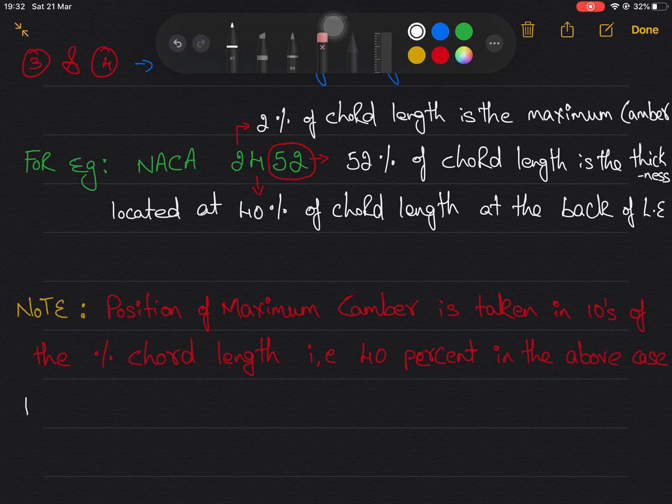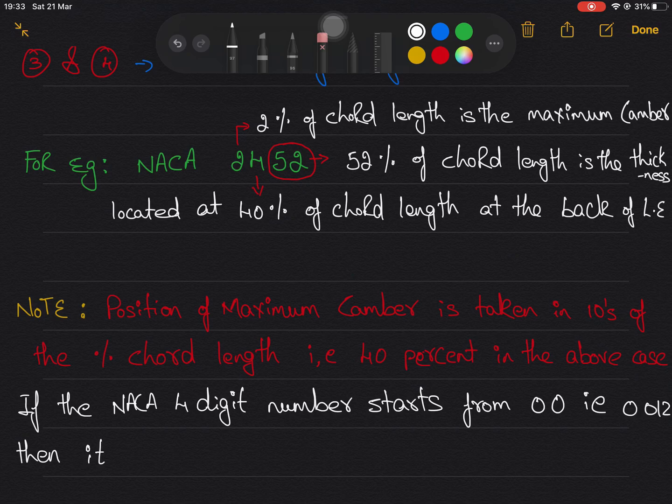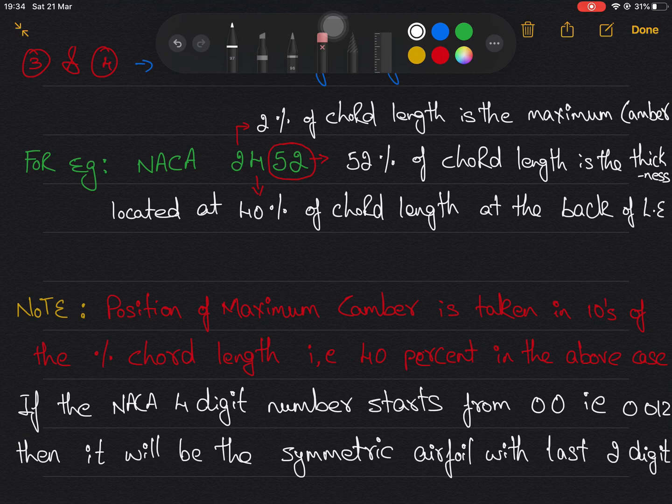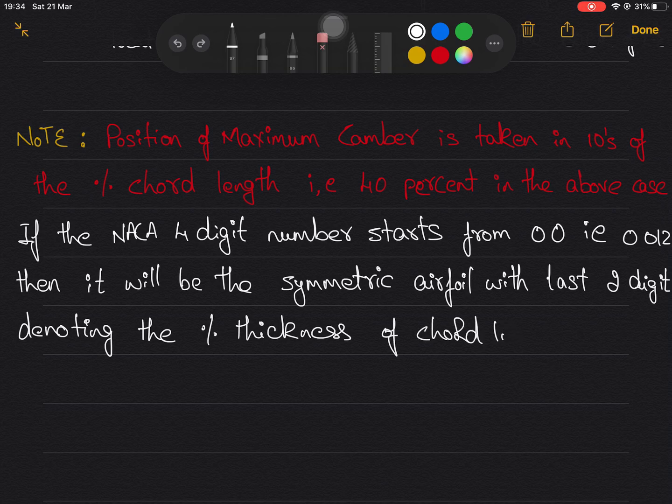If NACA four digit number starts from zero zero, take 0012, then it will be symmetric airfoil. Because if you remember in the last video, camber will be not there and symmetric airfoil or camber length will be zero. Only last two digits will be there denoting the thickness of airfoil in percentage of chord length.